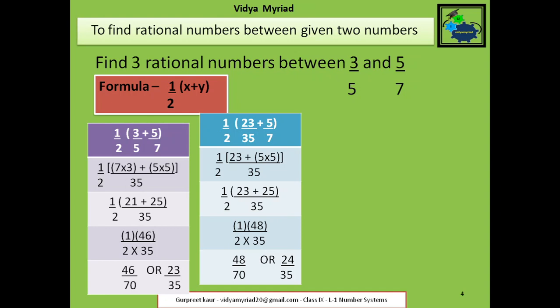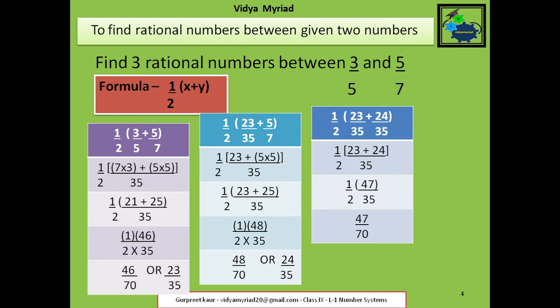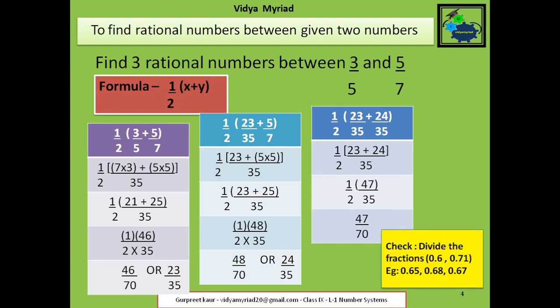After taking the LCM and solving, I get 48 upon 70, which can be further reduced to 24 upon 35. For the next case: 1 upon 2 multiplied by (23 upon 35 plus 24 upon 35). I took this for convenience since 35 is the same denominator, so I don't have to do much solving. I easily get 47 upon 70. Now to check: if I divide 3 upon 5 it comes to 0.6, and 5 upon 7 comes to 0.71. All my answers — when divided — fall within that range in the yellow box, which means my answer is correct.